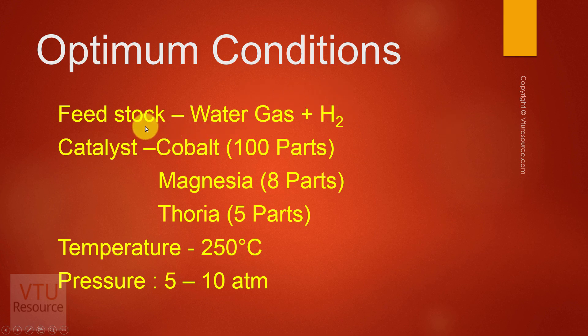The optimum conditions: the feedstock is water gas and hydrogen. The catalyst used by Fischer and Tropsch are Cobalt 100 parts, Magnesia 8 parts, Thoria 5 parts. This means if we are using Cobalt 100 grams, then we add 8 grams of Magnesia, 5 grams of Thoria. Depending upon the units, it is generalized as parts.